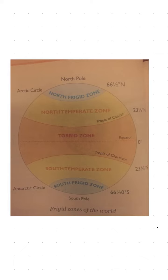Winters bahut lambi hoti hain aur temperature kahi baar minus 40 degrees Celsius tak gir jaata hai. In summer, which hardly extends for 2 to 3 months, the temperature may rise to 3 to 12 degrees Celsius — itna hi increase ho paata hai.